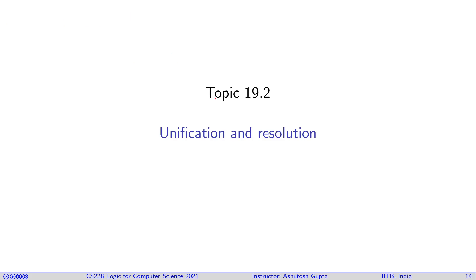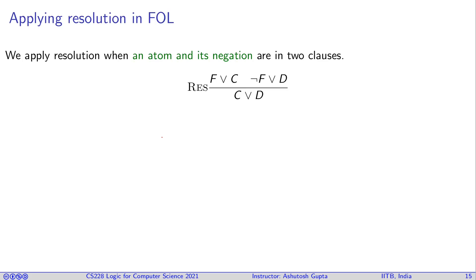Now, how we will build a resolution proof system for our sigma prime? So there are two steps we needed. One resolution, which very much like a propositional logic and new thing has come up with unification, which we have seen in the previous lecture.